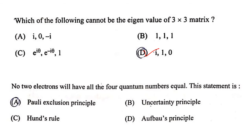The next question is: 'No two electrons will have all four quantum numbers equal.' This statement is Pauli's exclusion principle.